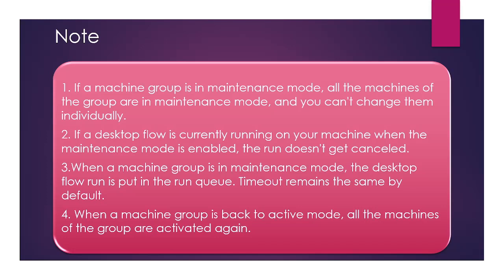When a machine group is in maintenance mode, desktop flow runs are put in the run queue and the timeout remains the same by default. When a machine group is back to active mode, all the machines of the group are activated again. So whenever your machine group is under maintenance, all machines will be in maintenance mode and all desktop flows will be queued to the default timeout.